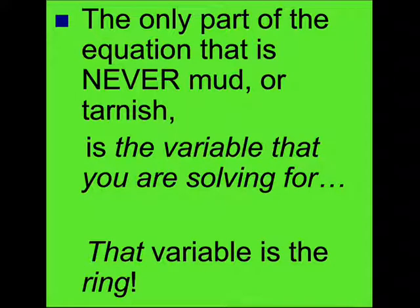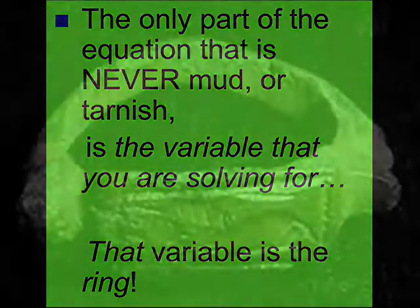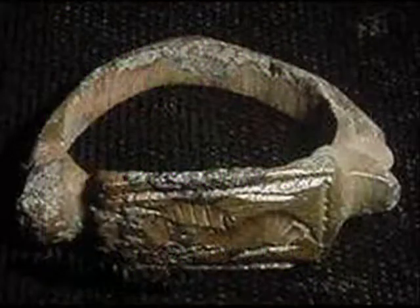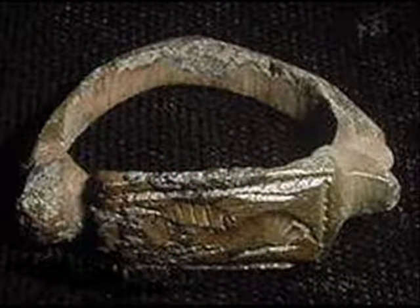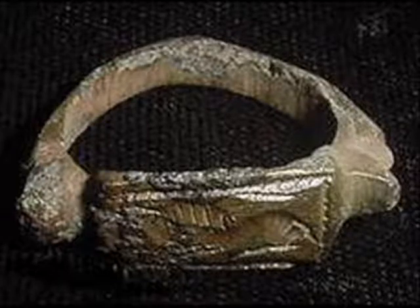Remember, the only part of the equation that's never mud or tarnish is the variable you're solving for, and that variable you could think of as the ring of the equation. When you start solving a single variable equation, remember that, and put a circle around the variable you're solving for. That way you'll remember that it is the ring of the equation.